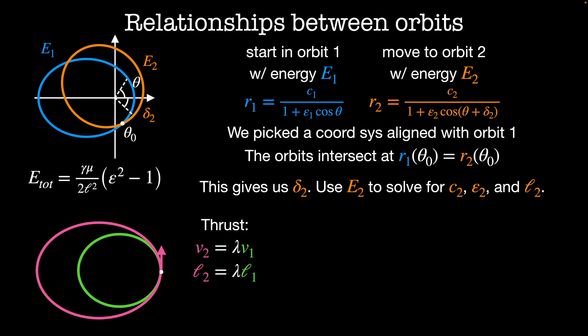The angular momentum, which is the radius cross the momentum, also increases by a factor of lambda because it's proportional to the velocity. Since the constant C equals angular momentum squared divided by the force constant gamma times the reduced mass mu, then C2 will equal lambda squared times C1, since gamma and mu don't change in this system.